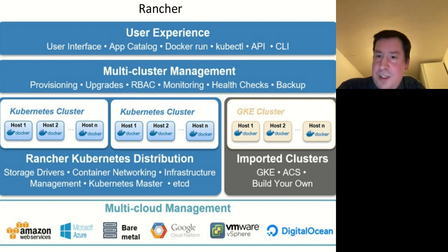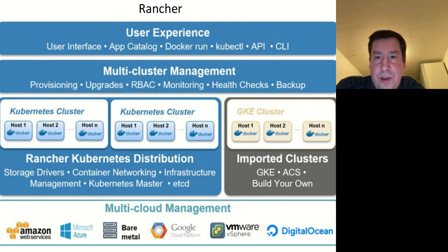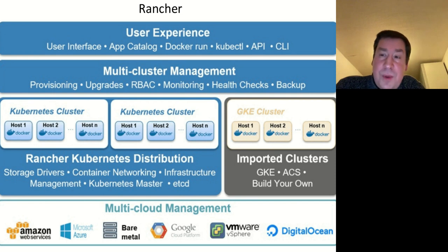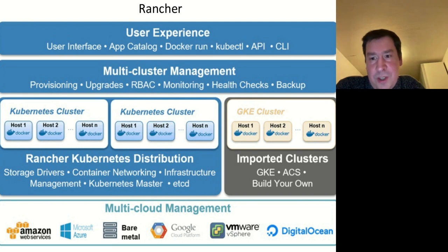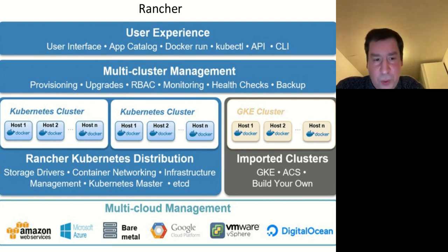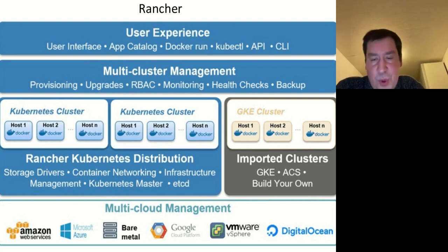Here we see basically a logical view of Rancher and the different features it provides. One interesting thing is the app catalog that allows providing a repository for Helm charts. Another important aspect is that Kubernetes clusters deployed by Rancher are still manageable by kubectl APIs and CLI. So you are not locked into some proprietary management system — you can just use the normal command-line utilities that you know from vanilla Kubernetes deployments.